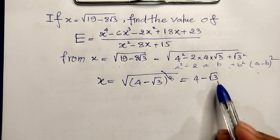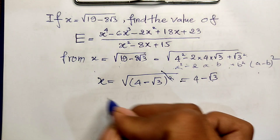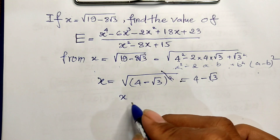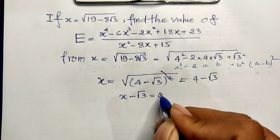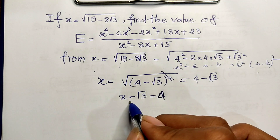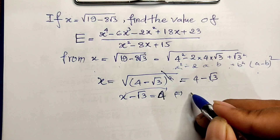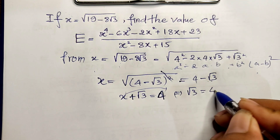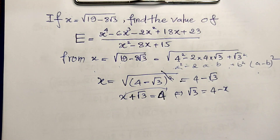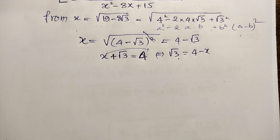Now I rearrange this. Moving √3 from the right-hand side to the left-hand side, I get x minus √3 equals 4. Then moving x to the right side, I get √3 equals 4 minus x. Now I raise both sides of this equation to the square.